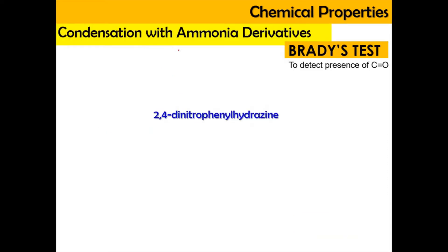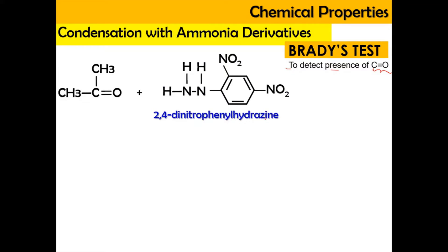Now we're going to look into the Brady's test, which is used to detect the presence of the carbon double bond with oxygen — the carbonyl group. If we have a carbonyl group, which is a ketone, we're going to react it with one of the ammonia derivatives, which is 2,4-dinitrophenylhydrazine. The 2,4-DNPH: D refers to dinitro, N refers to nitro, P refers to phenyl, and H refers to hydrazine. This is the reagent for Brady's test, also known as the Brady's reagent.